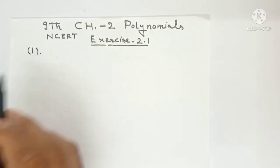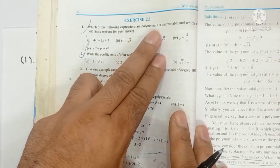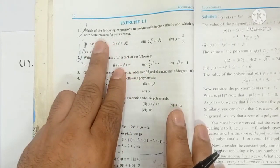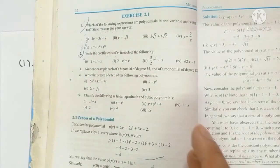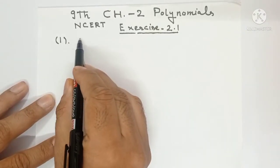Question number 1, which of the following expressions are polynomials in one variable and which are not? State the reason for your answer. So question first ka part 1 hai.